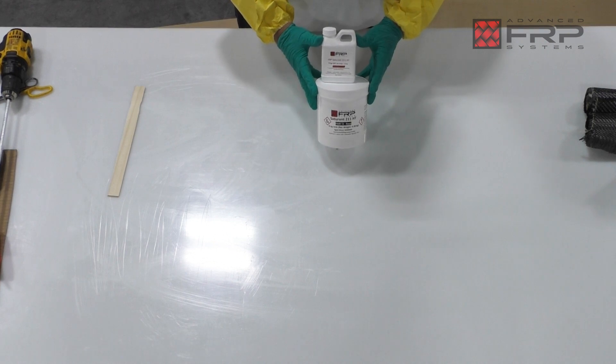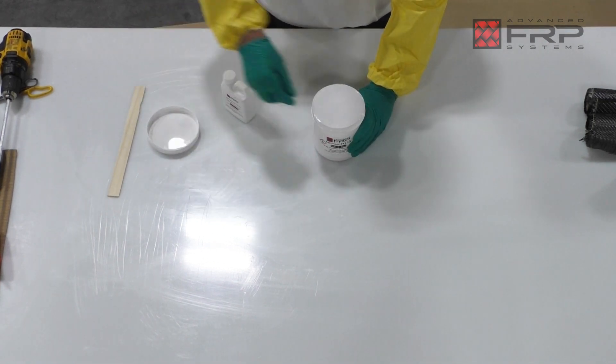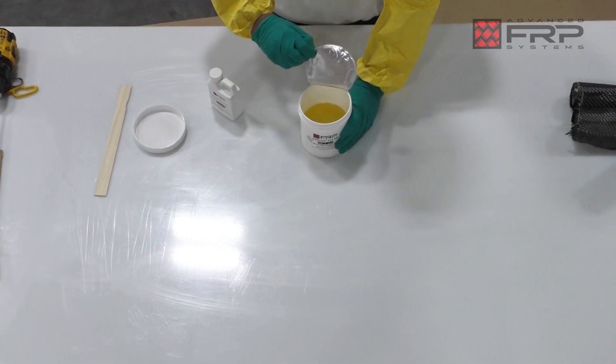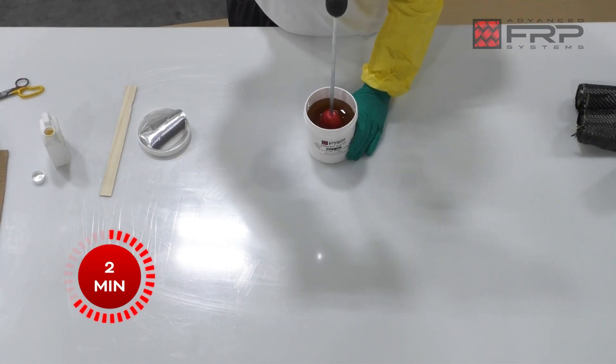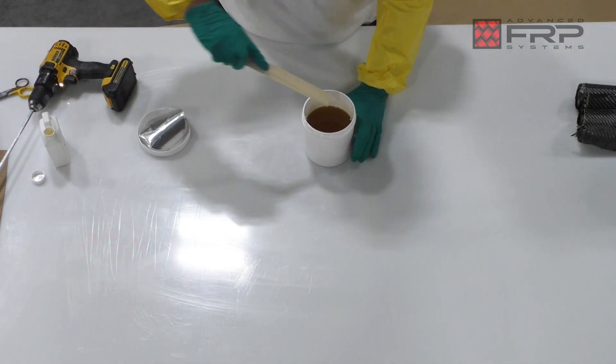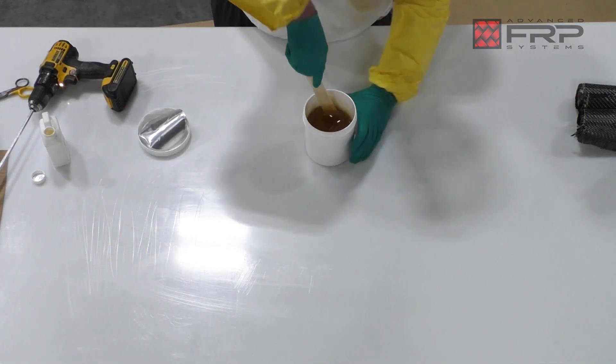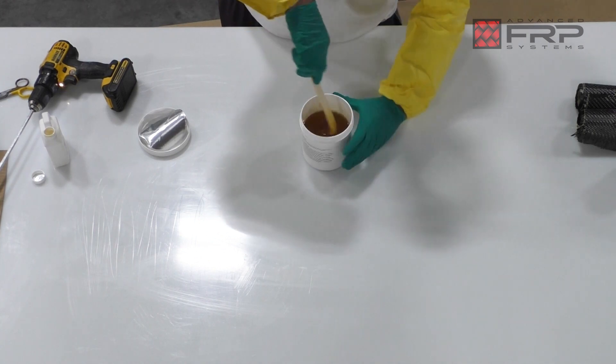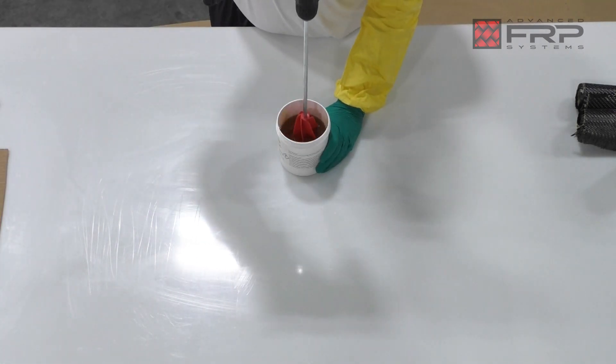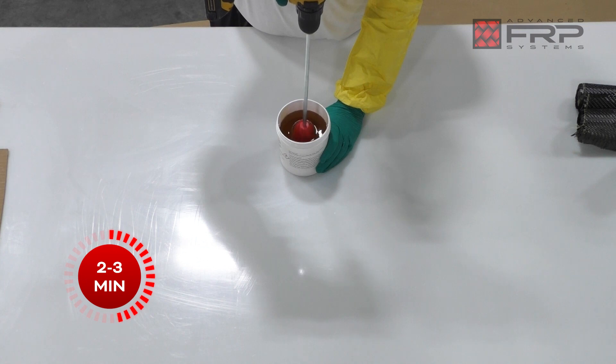Open both Part A and Part B of the FRP211HT Saturant, pour all of Part A into the Part B container, and mix for two minutes. Take one of the provided paint sticks and scrape the sides of the Part B container to the best of your ability. After scraping all of the material off the sides of the container and from the paint stick, mix for another two to three minutes.